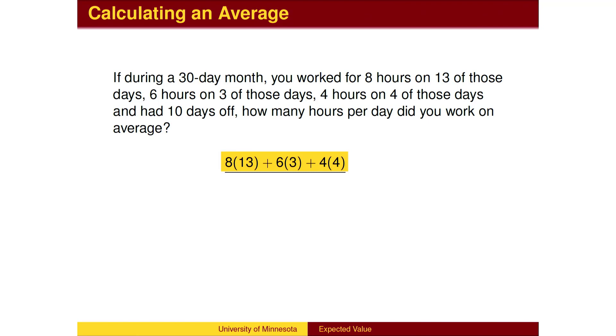The total hours worked can be found by multiplying the number of hours worked by the number of days with that schedule: 8 hours for 13 days, 6 hours for 3 days, 4 hours for 4 days. We then divide by the 30 days in the month to get the average.